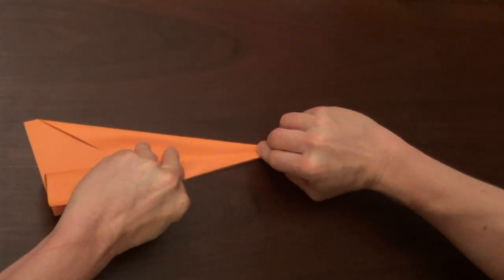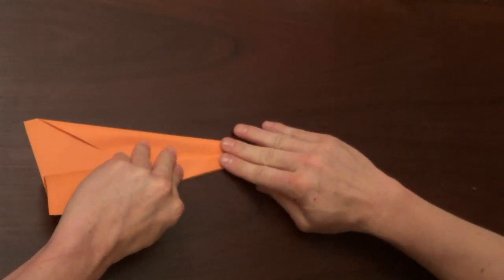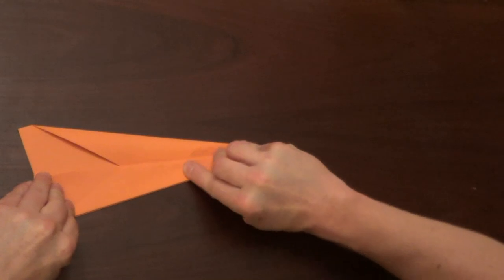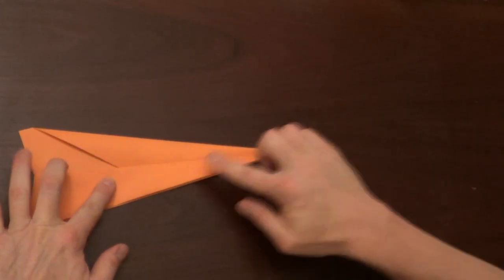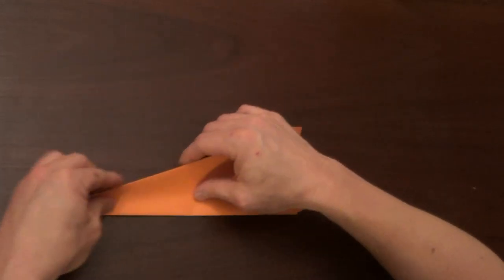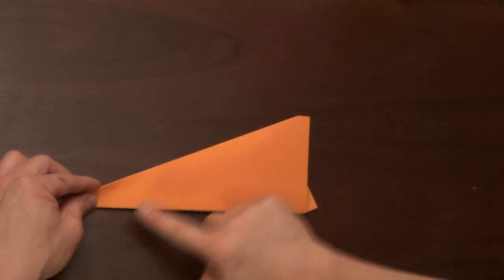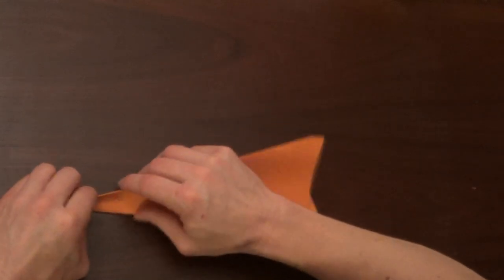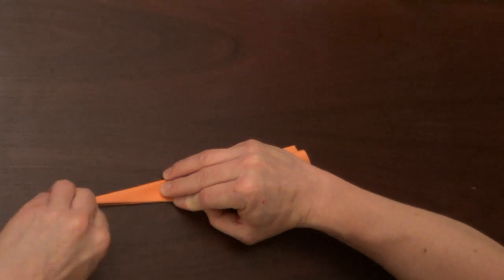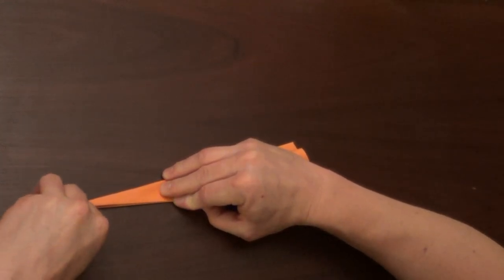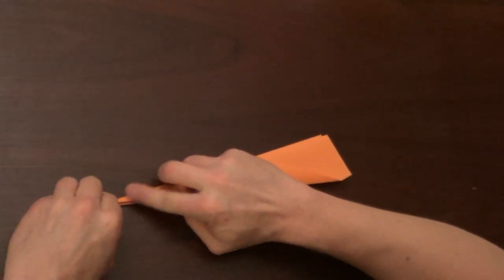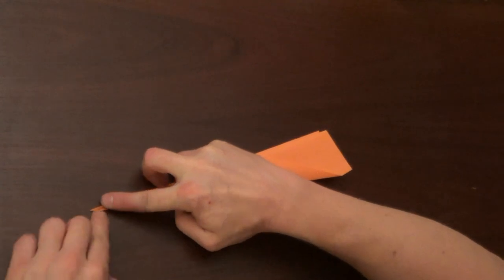Fold it down here all the way to the point, just like that. We'll flip it over and do the same thing on this side. We're going to make this edge line up with the bottom edge. Try to be real careful not to damage the tip. Make the nose as perfect as possible.